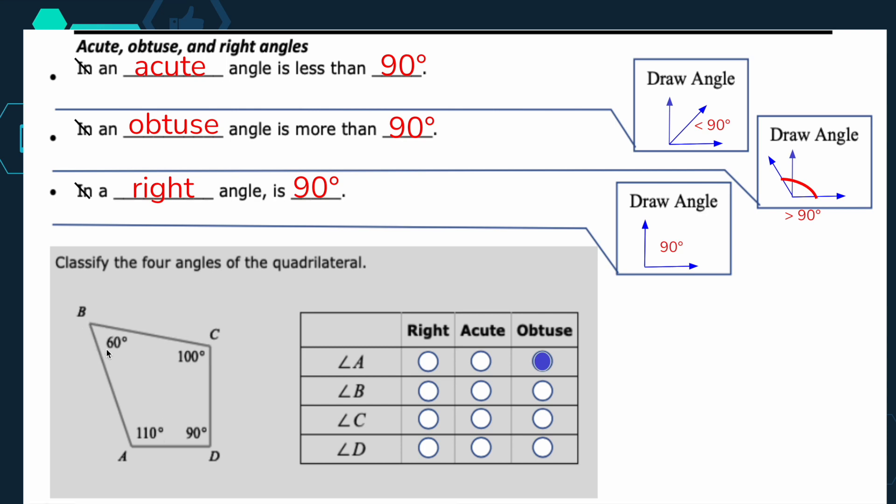And then angle B, that's 60 degrees. That's less than 90. So that's going to be acute. Angle C, well, that's more than 90 at 100. So that's obtuse again. And then angle D, well, that is 90. So that's our right angle. So that's all I want you to do is understand what obtuse, acute, and right mean and how to identify them within a figure. So I hope that helped and I'll see you in the next video.